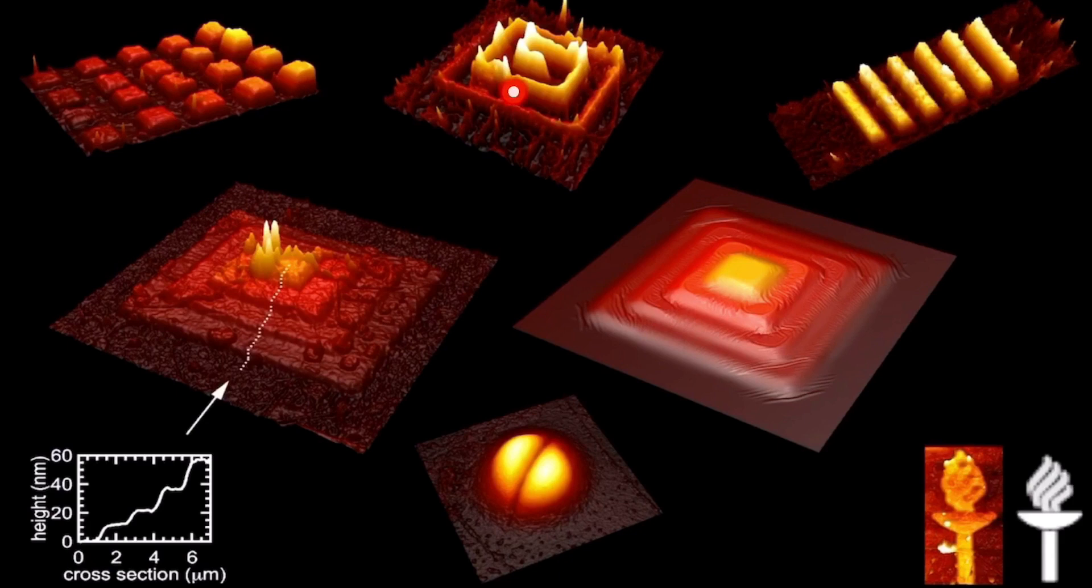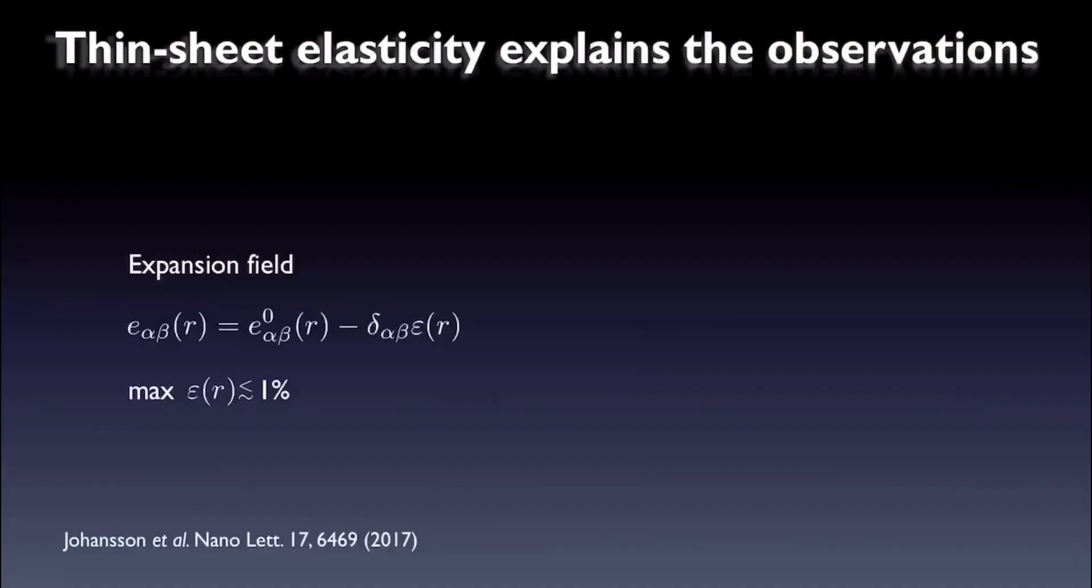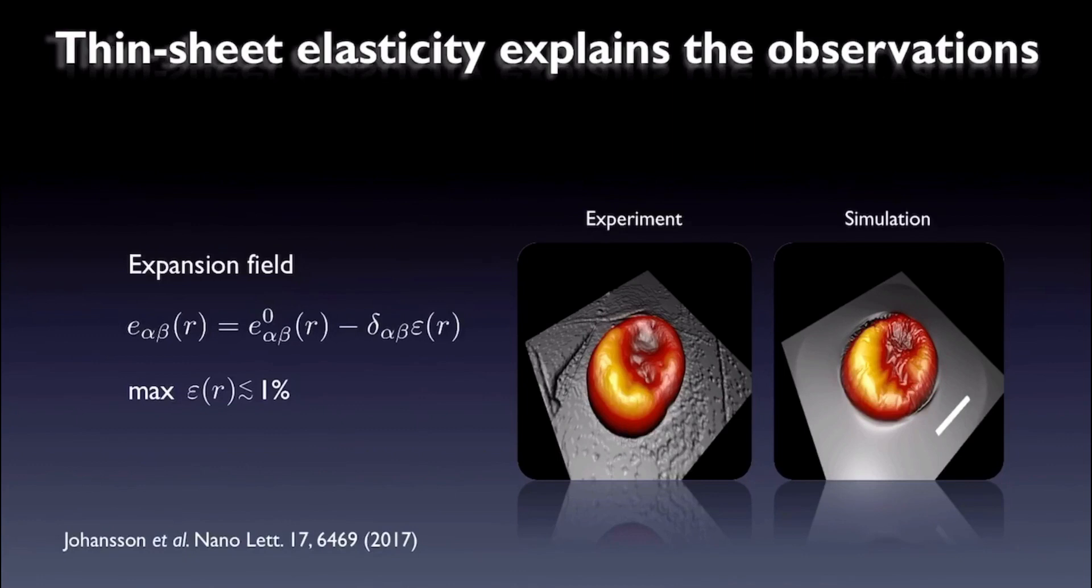Moreover, we can explain the experimental observations by simple thin-sheet elasticity theory. Namely, the forging induces an isotropic expansion field ε(r), which we can simply add into the strain tensor. The maximum of strain is mostly below 1%. So when we do this addition, make an educated guess for the strain field, and solve for the resulting thin-sheet geometries, we end up with fair agreement between experiment and simulation.